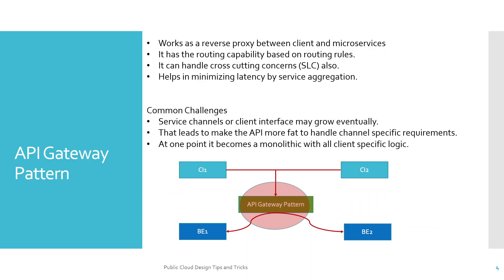The API gateway pattern is a reverse proxy between a client application and microservices. It has routing capability based on routing rules — essentially a single component that deals with all the routing required to connect to downstream systems. It can also handle crosscutting concerns, and it helps minimize latency through service aggregation. These are the main benefits of the API gateway pattern.